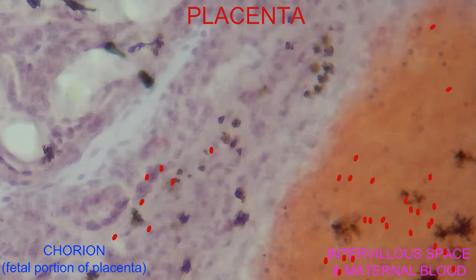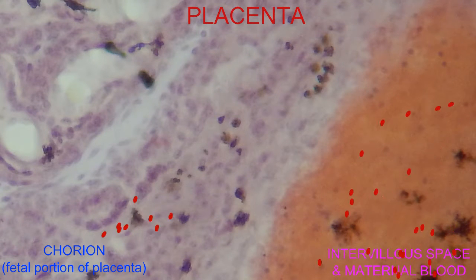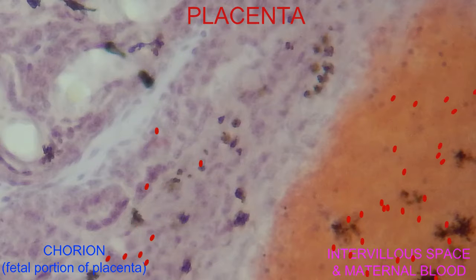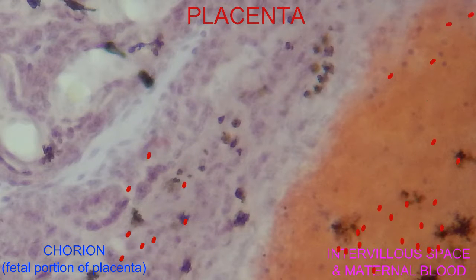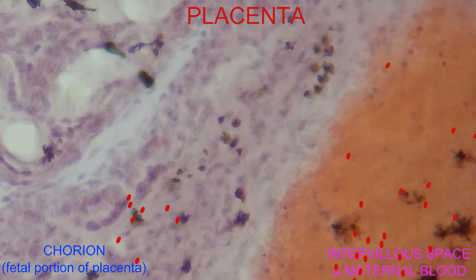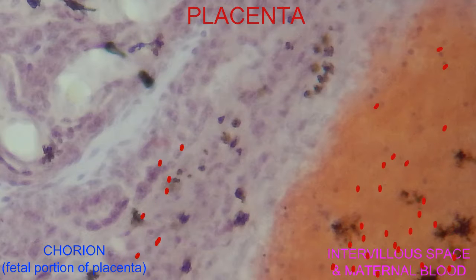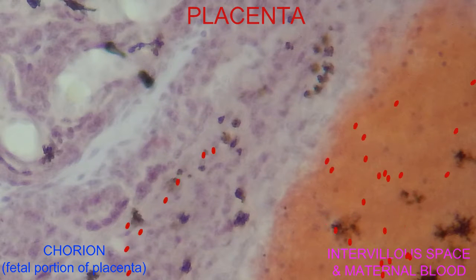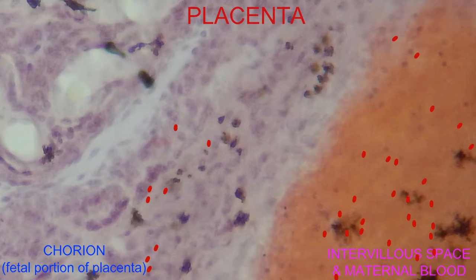Maternal blood arrives at the placenta through endometrial arterioles. It flows through intervillus spaces before returning through the maternal tissues through the endometrial venules.